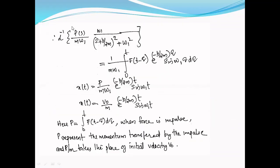Taking the inverse Laplace transform of both sides: L⁻¹{X(s)} = x(t) = L⁻¹{F(s)/(mω₁) · ω₁/((s + b/2m)² + ω₁²)}, which equals 1/(mω₁) · ∫₀ᵗ f(t − τ) · e^(−b/2m · τ) · sin(ω₁τ) dτ, where I am using τ instead of z — there is no problem with that.